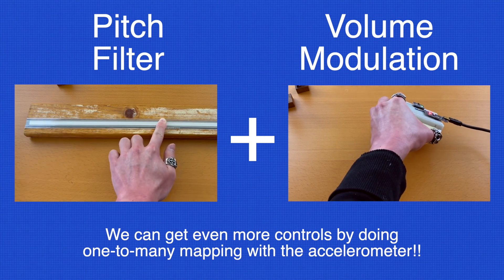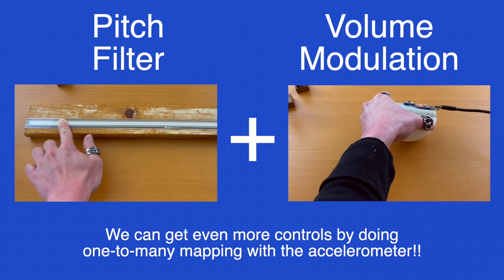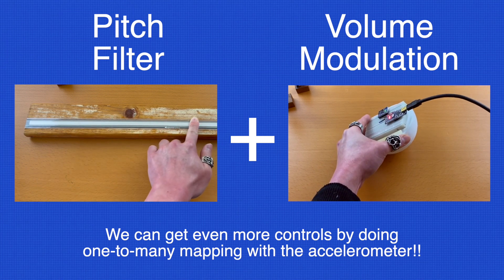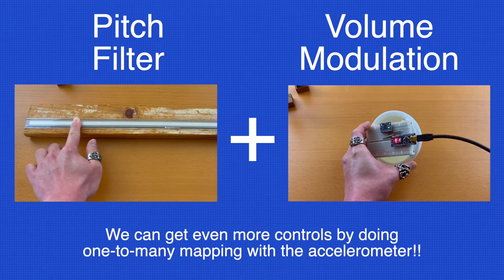We can of course add another sensor in addition to what we have here. So, as we can see, we don't have to overwhelm ourselves with tons of sensors. We can have plenty of intuitive controls even with just two sensors by implementing one-to-many mapping.